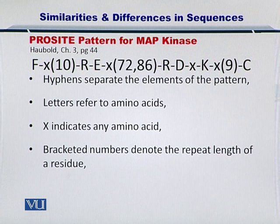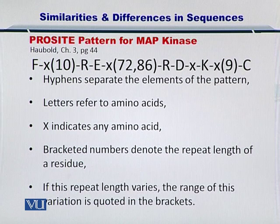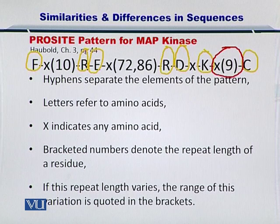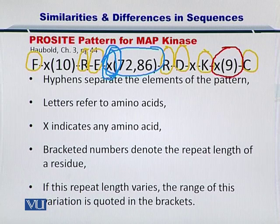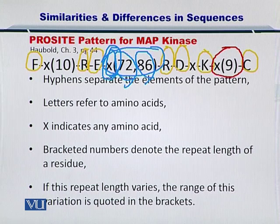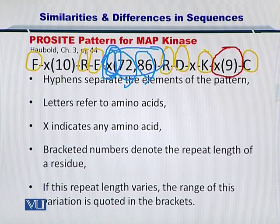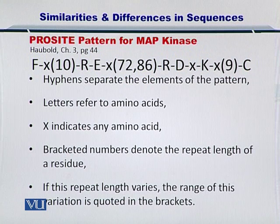However, there may be a situation where the repeat length is variable. In that case, the variation is represented with a range, meaning any amino acid X may occur 72 to 86 times. That is how you represent the ProSite pattern for the MAP kinase protein. MAP kinase is a very important protein — it phosphorylates many proteins and is responsible for mitosis and apoptosis in cellular behavior. Using such ProSite patterns, you can represent and compare sequences.